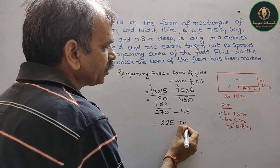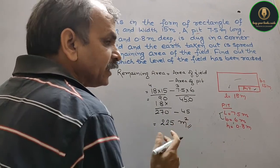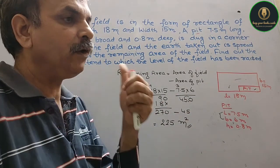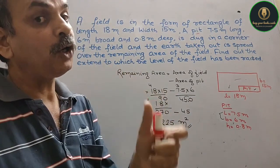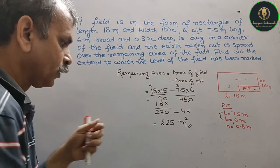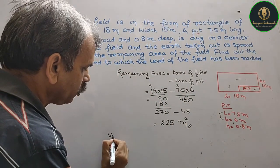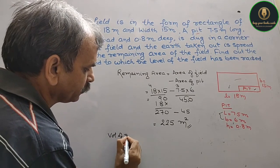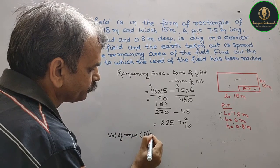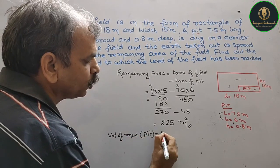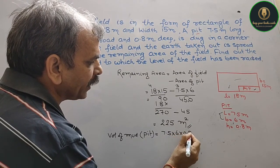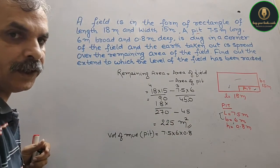That gives 225 square meters as the remaining area — jahan par aapko mud ko spread karna hai. Now we will find out the volume of the mud from the pit. Volume of mud from pit equals 7.5 into 6 into 0.8.